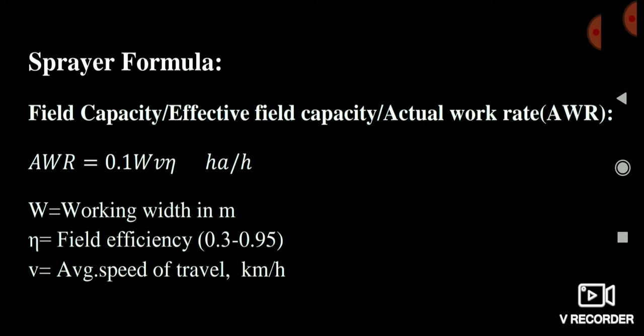For field capacity, we use the formula W×S divided by 10, and when efficiency is given, we multiply by efficiency. Actual field capacity is calculated by multiplying theoretical field capacity by efficiency. The unit is hectare per hour. If you want to convert to meter squared per second, put velocity in m/s, width in meters, and efficiency in decimal form, and do the unit conversion accordingly.